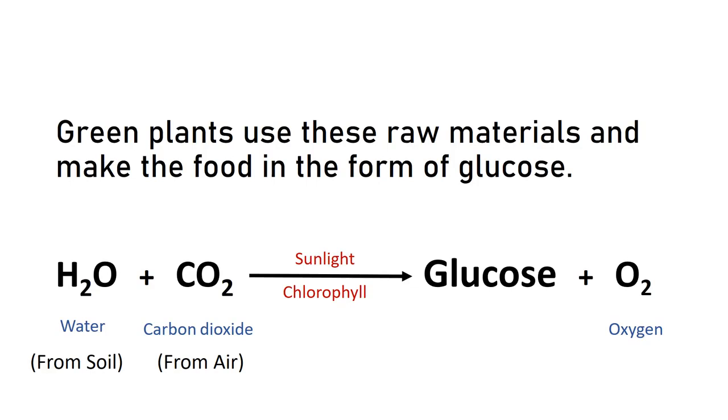Green plants use these raw materials and make the food in the form of glucose. Thus, the process by which green plants make their food from carbon dioxide and water using energy from the sun and release oxygen is called photosynthesis.